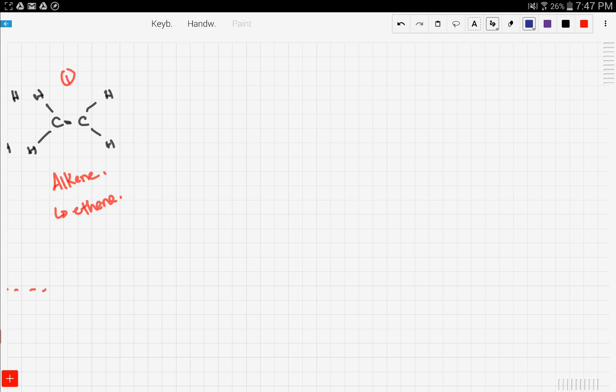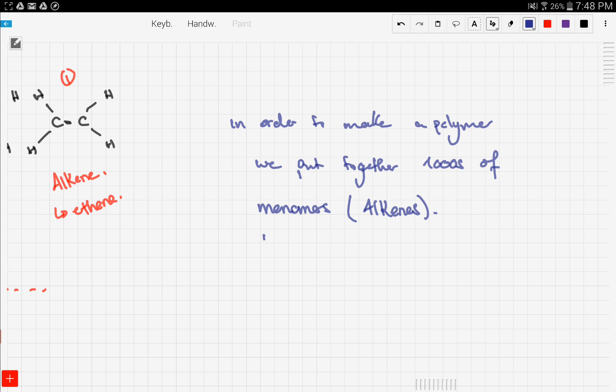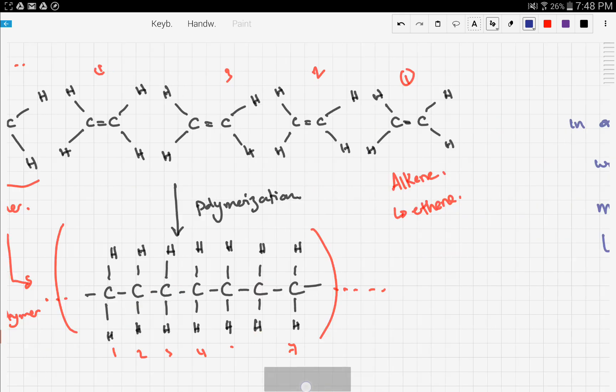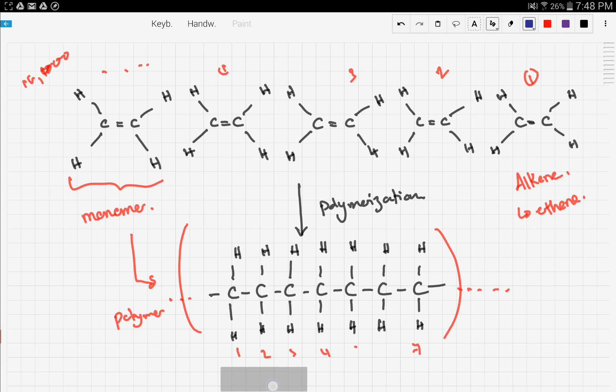So this is the process. Let's generalize this into a sentence. In order to make a polymer we put together thousands of monomers, which in this case is our alkenes. So we established that the monomer has to have a carbon-carbon double bond, it's an alkene.